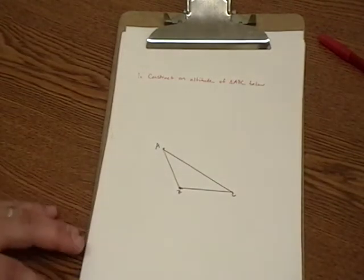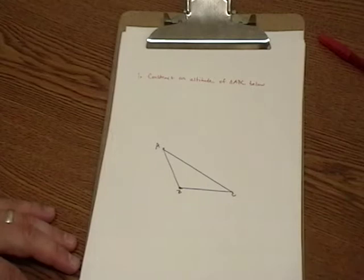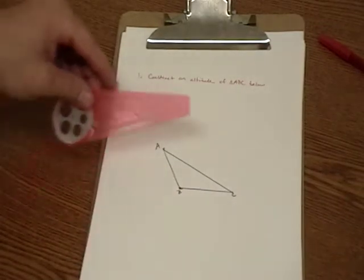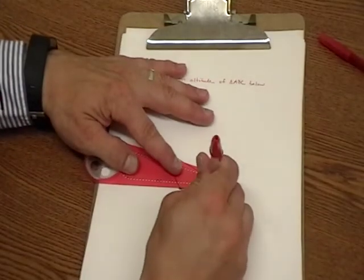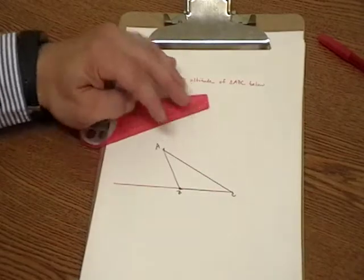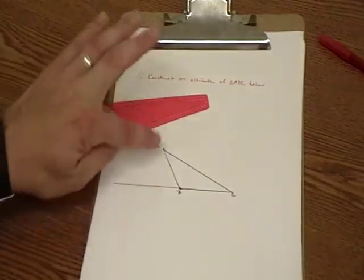I'm going to sketch the one from A to BC. My first step in this problem is going to be to extend side BC so that the altitude from A will run into it.